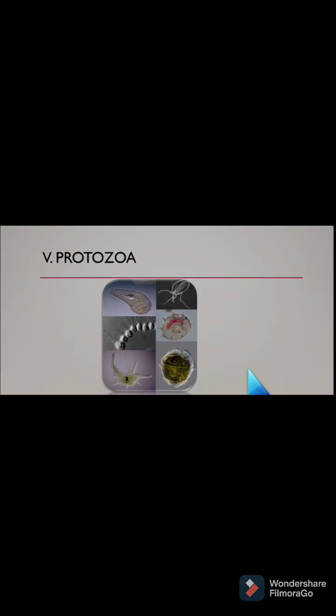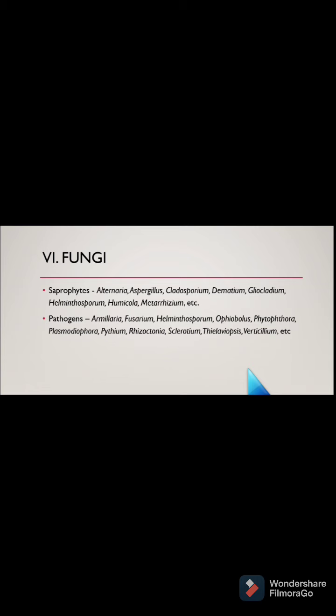The next group is fungi. In most aerated or cultivated soils, fungi share a major part of the total microbial biomass because of their large diameter and extensive network of mycelium. The population of soil fungi usually ranges from 2 x 10 to the power 4 to 1 x 10 to the power 6 propagules per gram dry soil. This number differs according to the isolation procedure and composition of the media used. Fungi derive nutrients for their growth from organic matter in the soil.